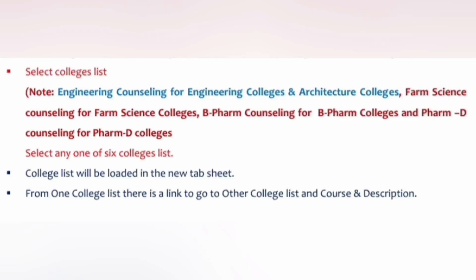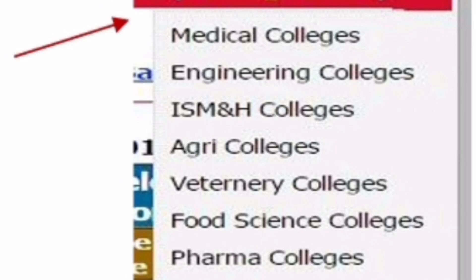Note that when you select a college, there will be different types of colleges available because KCET is not only for engineering — KCET also covers options for farm sciences, B Pharma, Pharma D, architecture, and other courses as well. You can select from a mix of both; there will be students who select engineering and Pharma option entries both. So you have options from medical colleges, engineering colleges, ISMH, agriculture colleges, veterinary colleges, food sciences colleges, Pharma colleges, and Pharma lateral entry or Pharma D.